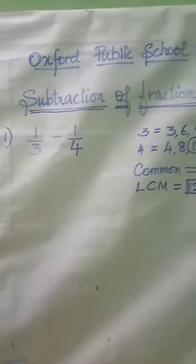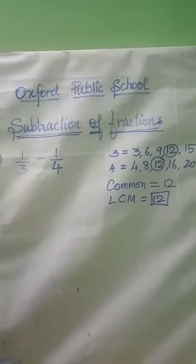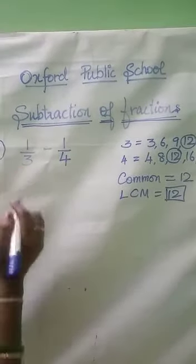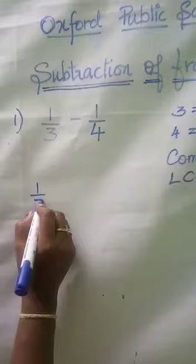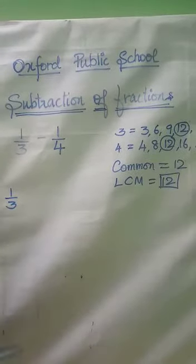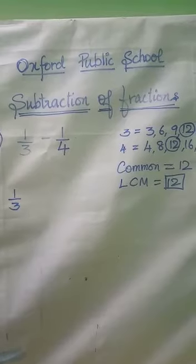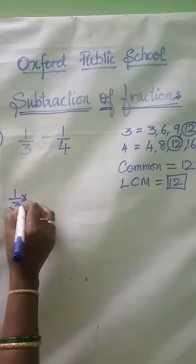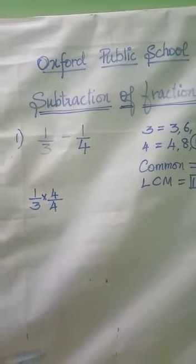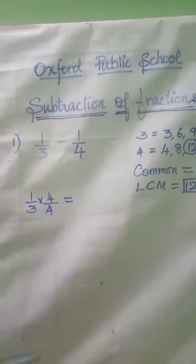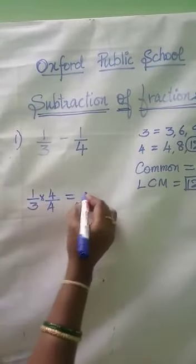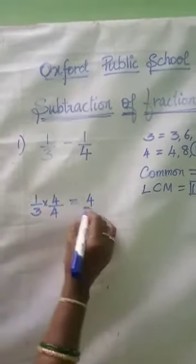So in order to have 12 in our denominators we are going to multiply with the denominator of the fraction. Let us take first 1 by 3. In order to have my denominator 12, what multiple will I be multiplying here? 4. When I multiply by 4, both numerator and denominator I should multiply. So what will be the new fraction? 1 times 4 is 4, 3 times 4 is 12.